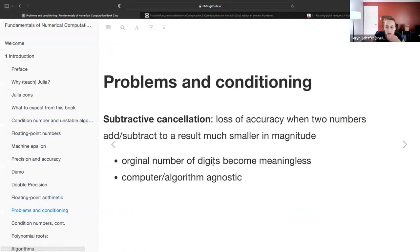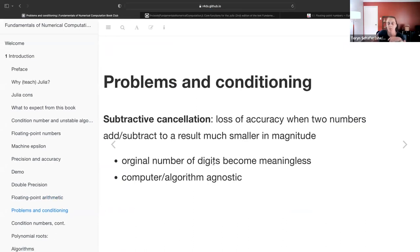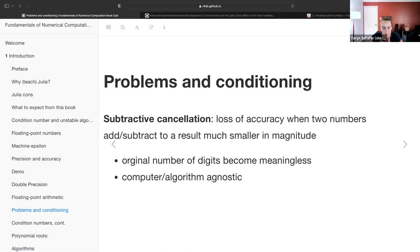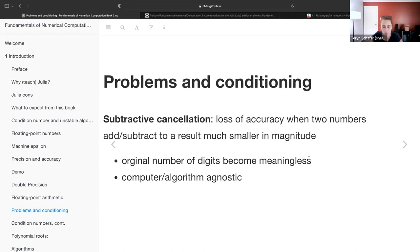One of the problems with doing floating point arithmetic is what they define as subtractive cancellation. This is the loss of accuracy when two numbers add or subtract to a result much smaller in magnitude. If you think about significant digits, the original number of digits become meaningless. For example, you have a bunch of trailing zeros and those zeros are meaningless really. This property, subtractive cancellation, is agnostic to the algorithm or the machine. It is a problem of the problem itself, that we're subtracting two numbers where the difference is on a different magnitude.